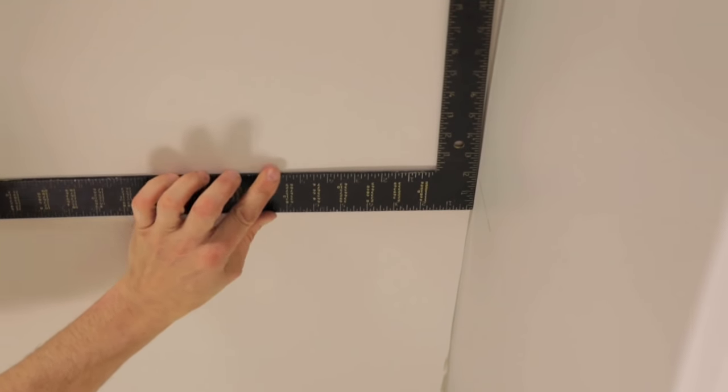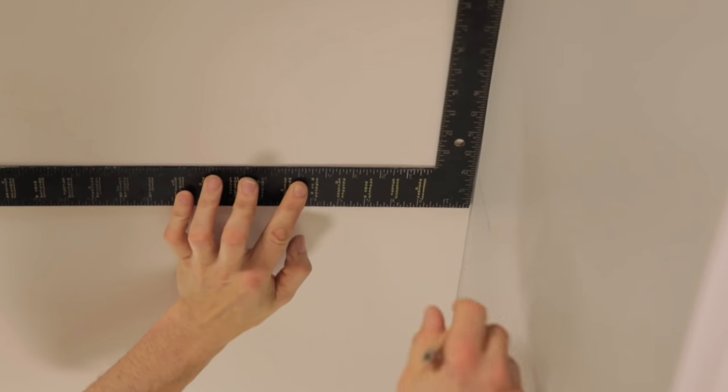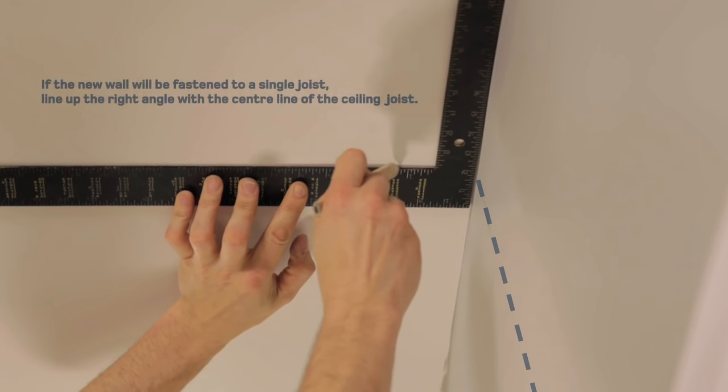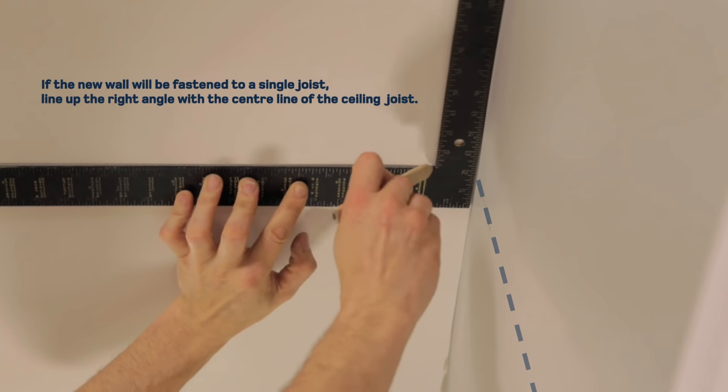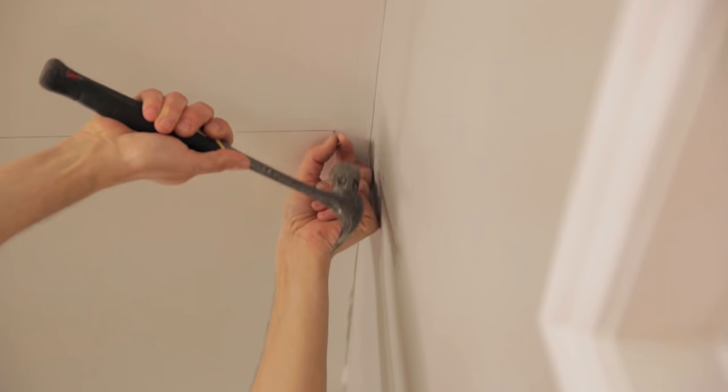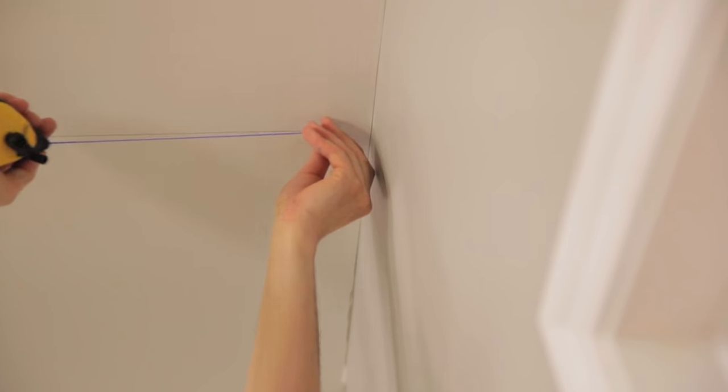Place a square flat on the ceiling with one of its edges touching the existing wall so that the right angle is lined up with the center line of the stud previously marked. With the square, trace a line of at least 18 inches long on the ceiling. Snap a chalk line over the existing line and mark the rest of the wall line.